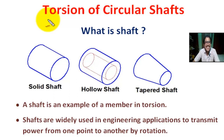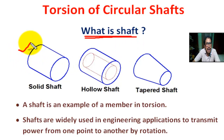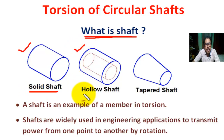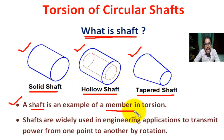Hello students, today we are going to learn introduction on torsion of circular shaft. First of all, what is a shaft? This is the figure of a solid shaft, this is the figure of a hollow shaft, and this is the figure of a tapered shaft. A shaft is an example of a member in torsion.